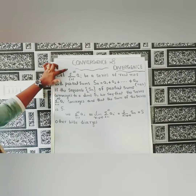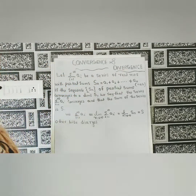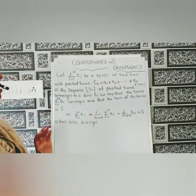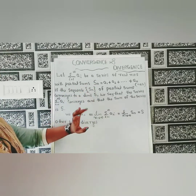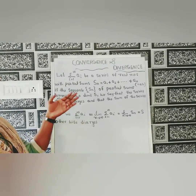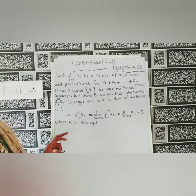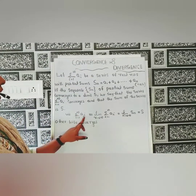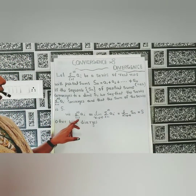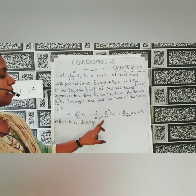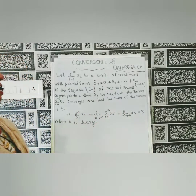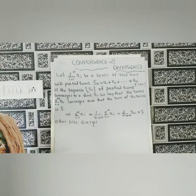Let sigma i from 1 to infinity a_i be a series of real numbers with partial sums s_n = a_1 + a_2 + ... + a_n. If the sequence s_n of partial sums converges to a limit s, then we say the series converges and the sum is s. That means sigma i from 1 to infinity a_i = limit n to infinity s_n = s. Otherwise the series diverges.